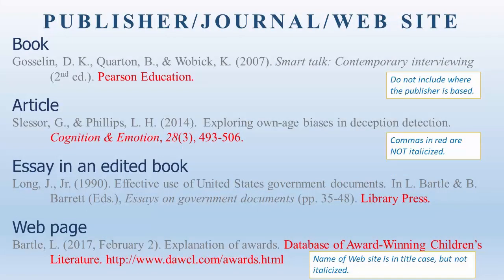The next piece of an APA citation is the responsible party. In the case of a book, this is the publisher. In the case of an article, it is the name of the journal, magazine, or newspaper. And in the case of a webpage, it is the overall site that the webpage belongs to, if there is one. Starting with the book example, you can see the name of the publisher is Pearson Education. It is a proper noun, so it is in title case, followed by a period. Skipping to the essay in an edited book, you see again the name of the publisher in title case, followed by a period — in this case, Library Press.